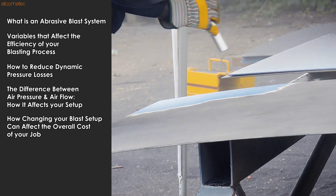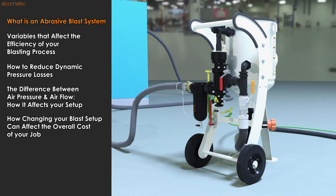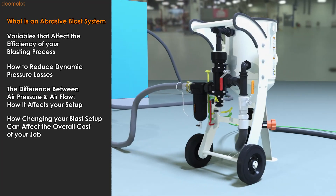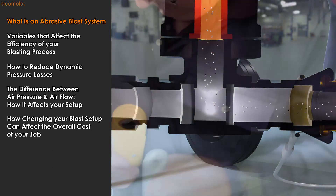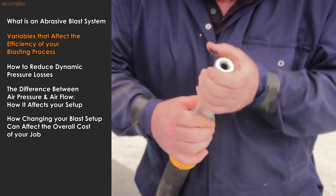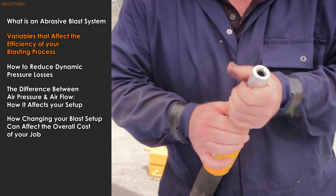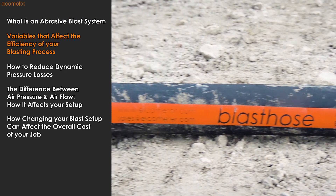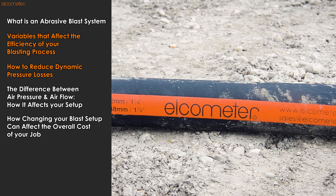In part one we covered what an abrasive blast system is, and how the aim is to give your abrasive as much kinetic energy as possible to ensure an efficient blast. In part two we'll be identifying the key variables that affect your blast system's efficiency, including how to reduce dynamic pressure loss.